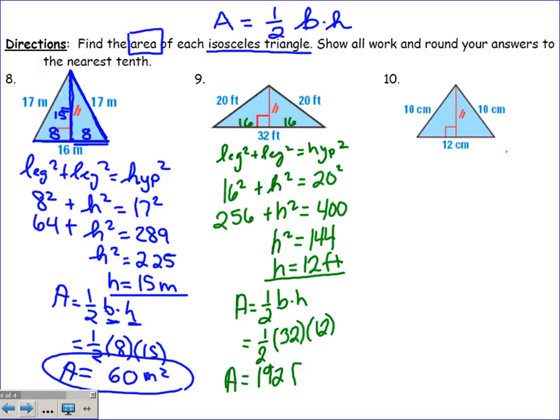And then you do area equals one half base times height. What's our base of our entire triangle? 32. And our height? 12. Half of 32 is 16, 16 times 12 is 192 square feet. Because we're trying to figure out this height, we're basically using a small triangle. You should use the entire part for the base.